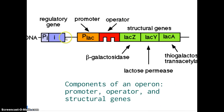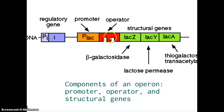Looking at an image of an operon, we see the DNA containing genes that will be transcribed to make enzymes used to break down lactose. Upstream of those genes is the promoter where RNA polymerase attaches, and the operator, which acts like a switch that can be turned on or off to allow RNA polymerase to attach and transcribe those genes. A regulatory protein produces the key that switches this on or off. An operon has three parts: a promoter, an operator, and structural genes.